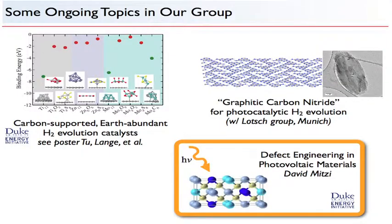In our group, one project supported by the energy initiative focuses on carbon-supported earth-abundant hydrogen evolution catalysts. We also work on graphitic carbon nitride materials for photocatalytic hydrogen evolution, in collaboration with a group in Munich. Finally, there is the defect engineering project, which I'll use my last two minutes to describe.